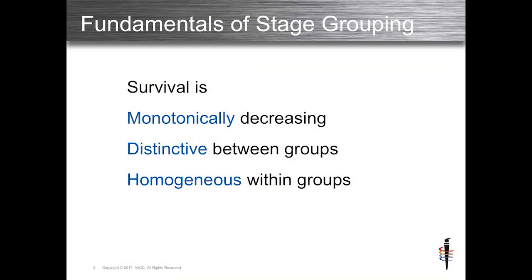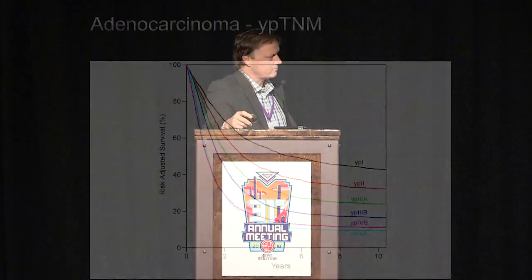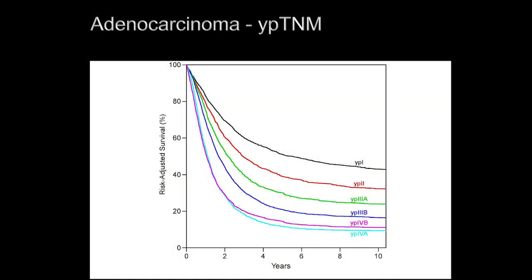Some fundamentals about stage grouping — these are the laws of stage grouping. They should be monotonically decreasing, distinctive, and homogeneous. Monotonically decreasing means it goes from stage 1 to 2 to 3 in order. Distinctive means that they don't cross over. This example of the post-neoadjuvant therapy YPTNM shows very monotonic distinctive survival curves at the top, but we had to make an exception at the bottom where 4B and 4A cross over — non-distinctive and non-monotonic.